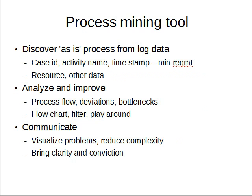Is there a tool for doing this? How does this tool work or help? Since we are dealing with a huge volume of data, we need a tool. Process mining tools can be used for discovering the as-is process from log data residing in the computer system network. The minimum data requirements are case ID, activity name, and a timestamp. Without these, process mining is not possible at all. Other associated data such as resources can help add significant value, but these three are a basic minimum. The discovered process enables understanding of the flow, deviations, and bottlenecks. One can also filter the data with different criteria and play around with the data to discover more in an interactive way.